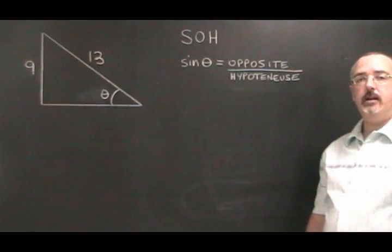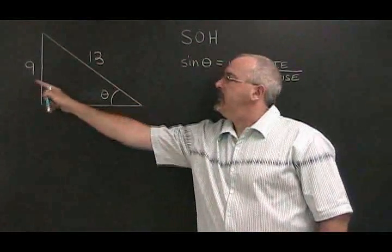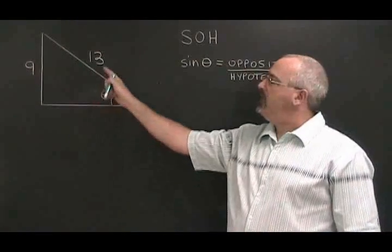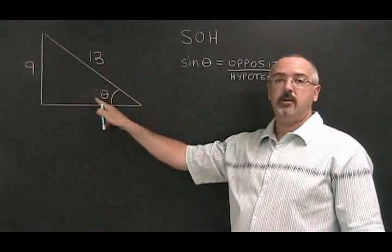In example 3, we know that the side opposite to the angle is 9, and we know the hypotenuse is 13, but we want to know the measure of the angle.